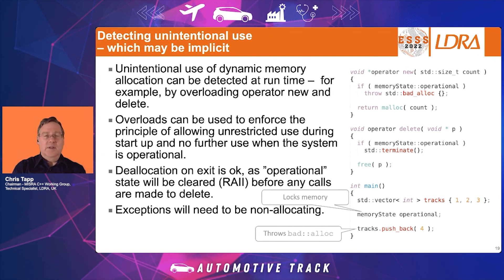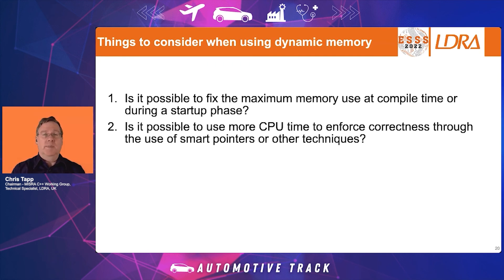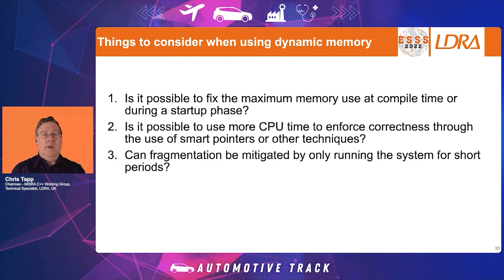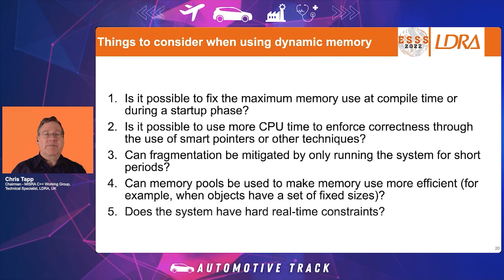The only slight restriction with this approach is that any exceptions used must be non-allocating, otherwise they could cause operator new to throw bad_alloc when the system is operational. A few things to consider: Is it possible to fix the maximum memory used at compile time or during startup? Can smart pointers or other techniques enforce memory correctness? Can fragmentation be mitigated by only running the system for short periods? Can memory pools make use more efficient when objects have fixed sizes? And does the system have hard real-time constraints that may impact the allocators used?